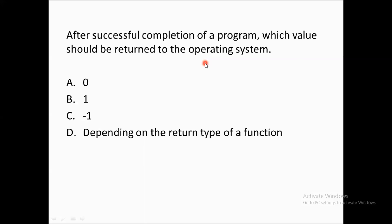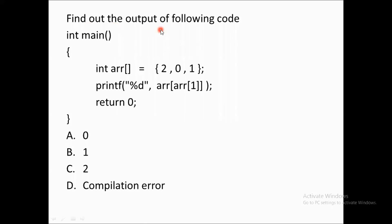When you write 'void main', there is no need for a return statement since void means it returns nothing. But when you write 'int main', you must return an integer value. The value zero denotes successful completion of a program. Returning zero tells the operating system the exit status — that the program executed successfully and did what it was expected to do. So option A, return 0, is the correct answer.